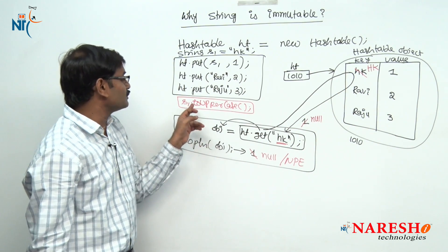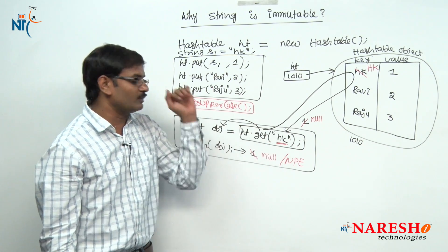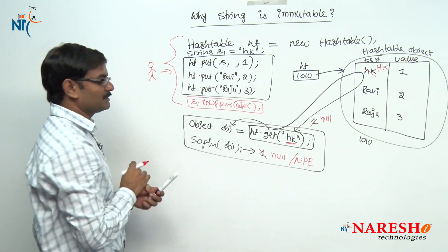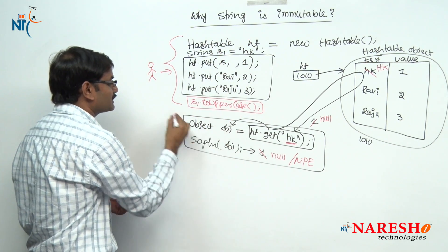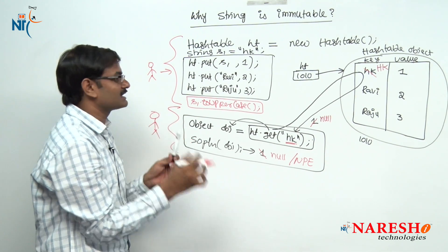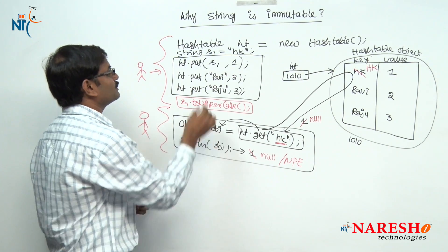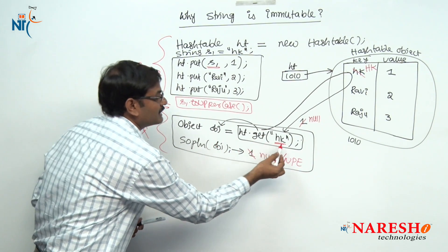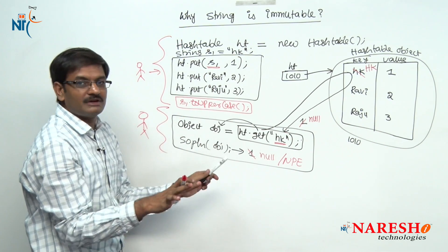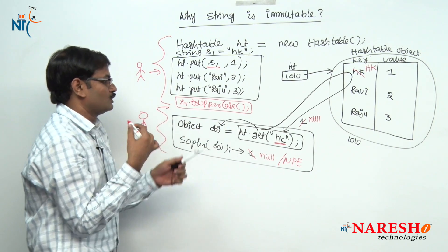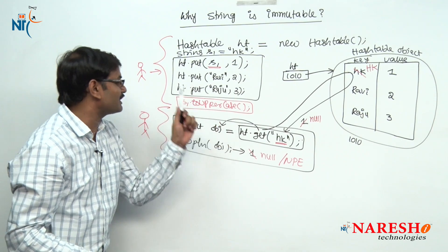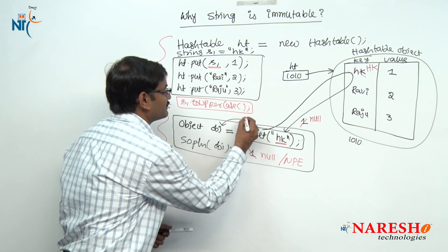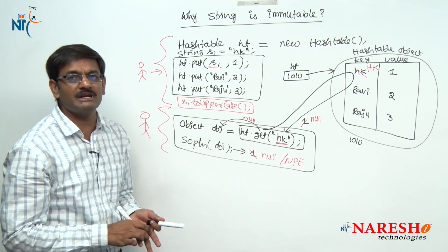You may ask: sir, I know I modified to uppercase, so why would I use lowercase? But one point you should understand. In a project, this code is developed by one programmer and the ht object is passed as an argument to another programmer. At the time of project design, all key values are decided by the manager or team lead. The team lead told the first programmer to store the string name as small hk, and informed the other programmer to retrieve with small hk. Later, unknowingly, this programmer wrote s1.toUpperCase(). Because of this, if data is modified in the same object, the other programmer's retrieval will get affected and the value returned is null. To solve this problem, Sun Microsystems gave string object as immutable.